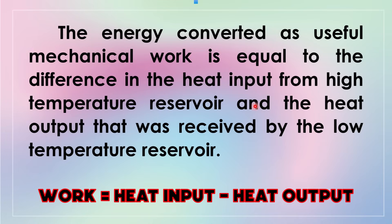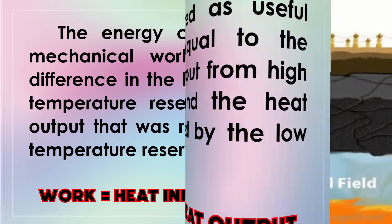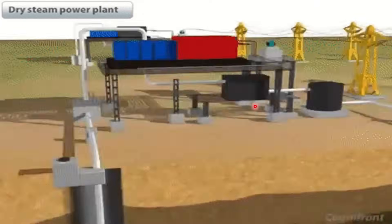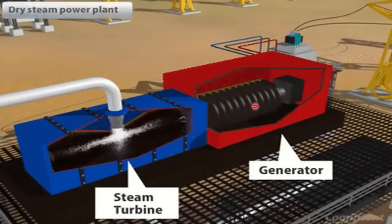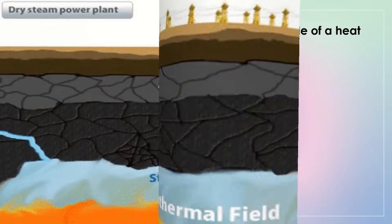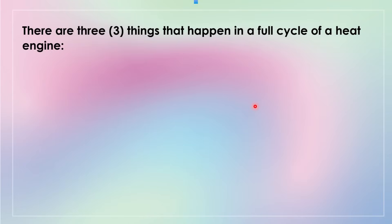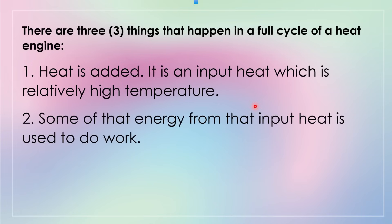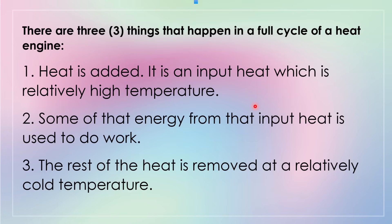The energy converted as useful mechanical work is equal to the difference in the heat input from the high temperature reservoir and the heat output received by the low temperature reservoir. So, work is equal to heat input minus heat output. A heat engine is a device which converts thermal energy to mechanical energy. Examples of heat engines are power plants such as geothermal. There are three things that happen in a full cycle of a heat engine: first, heat is added as input heat at a relatively high temperature; second, some of that energy is used to do work; and third, the rest of the heat is removed at a relatively cold temperature.